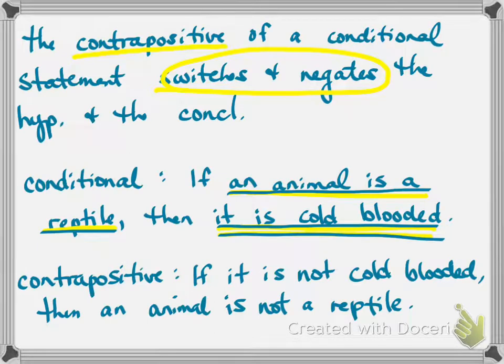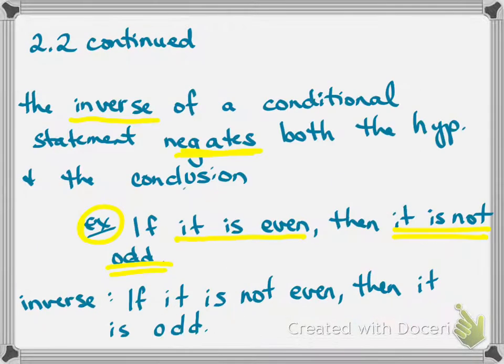Then we'll end with this part, and instead of saying an animal is a reptile, we will say an animal is not a reptile. The original, if an animal is a reptile, then it is cold-blooded. Contrapositive, if it is not cold-blooded, then an animal is not a reptile. I just realized what I forgot to do with you all. I forgot to continue on with the if P then Q idea.